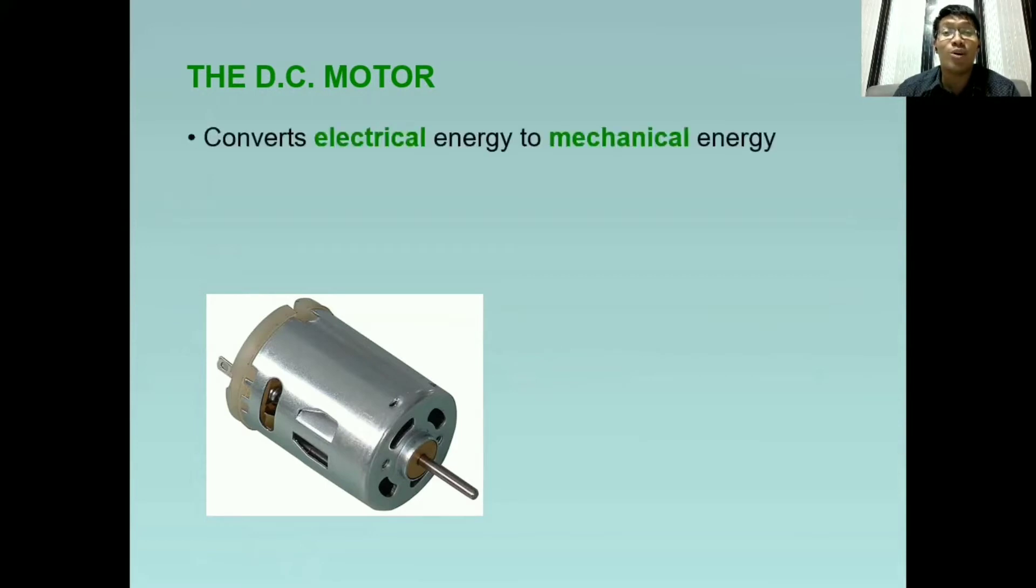So DC motor converts electrical energy to mechanical energy. It means yung kuryente na dumadaloy sa wire coil natin ay magkukos ng mechanical energy. So one form of mechanical energy is kinetic energy which is the energy possessed by a moving object. So gagalaw ang coil na ito. So that's why it is called turning effect.